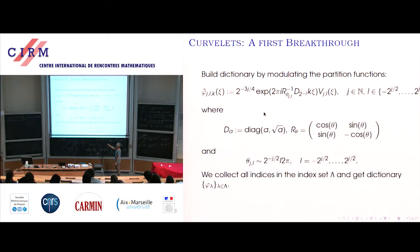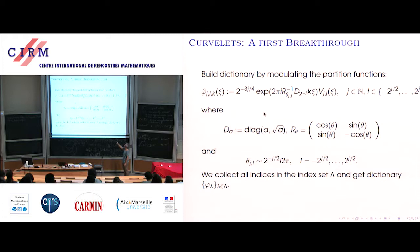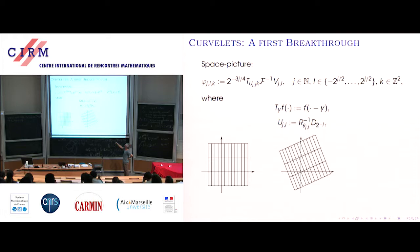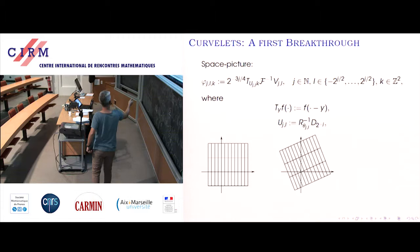In space, modulation corresponds to translation. So a curvelet is the inverse Fourier transform of these window functions, translated along anisotropic grids that are rotated according to the parameter l. That's curvelets.